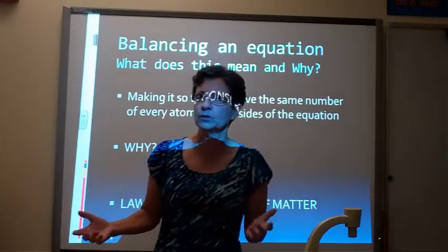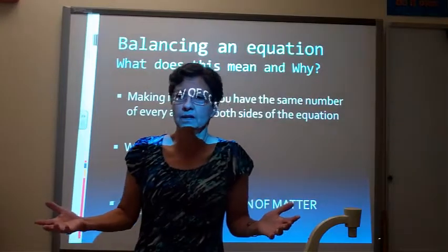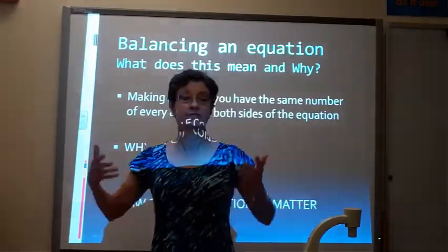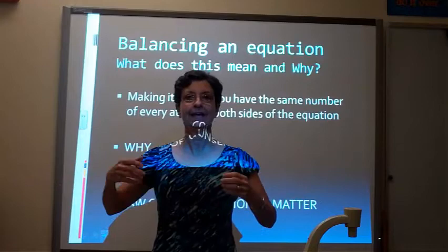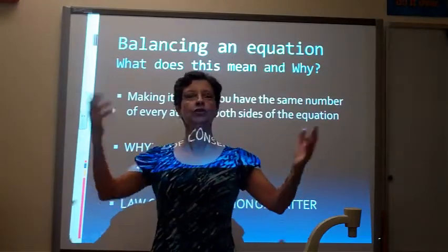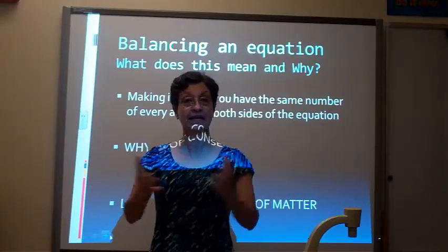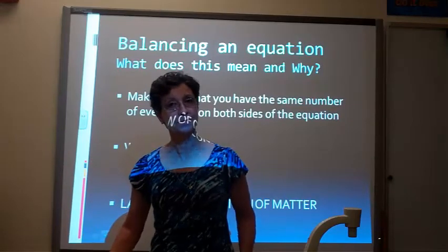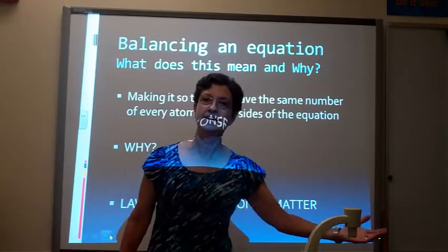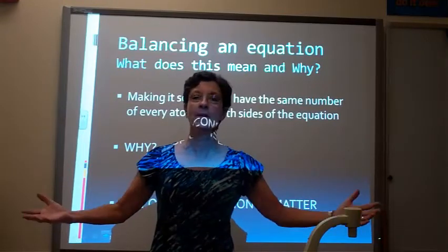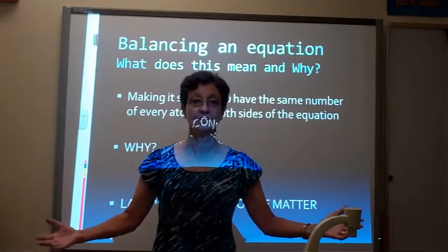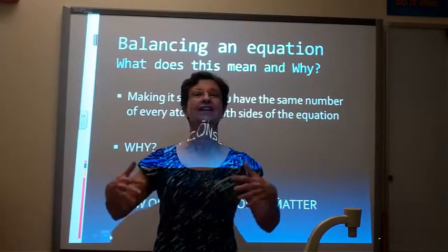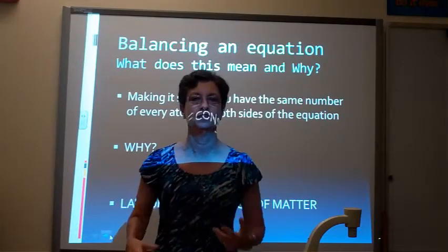That law says that matter can neither be created nor destroyed. So if matter cannot be created or destroyed, you can't create atoms and you can't destroy them — they can't just poof disappear, and you can't create new ones. So when a chemical reaction happens, you start with a certain number of atoms of each type, and you'll end up with the same number of atoms no matter what the reaction is. The only thing happening during a chemical reaction is rearranging of these atoms.